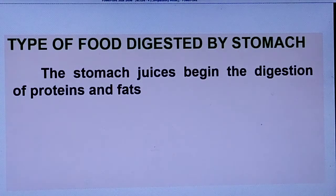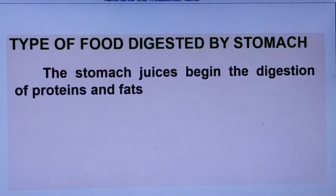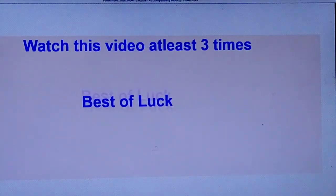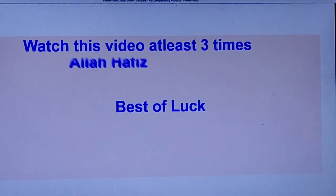What type of food is digested by the stomach? The stomach juices begin the digestion of proteins and fats. The digestion of carbohydrates had already begun in the mouth, but carbohydrate digestion continues in the stomach as well. Carbohydrates, proteins, and fats all continue digestion here. Best of luck, and Allah Hafiz.